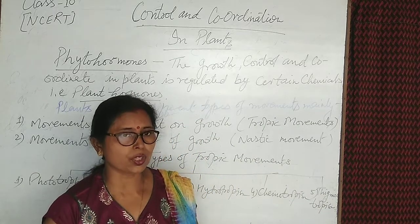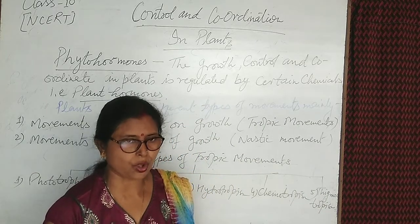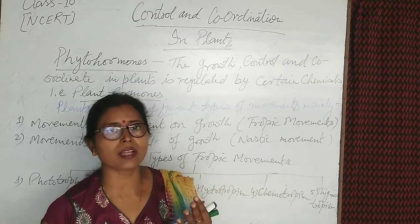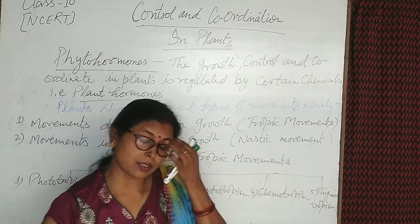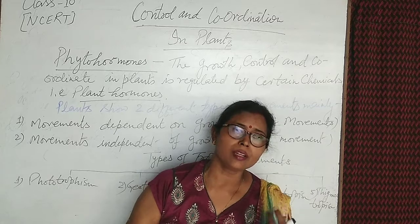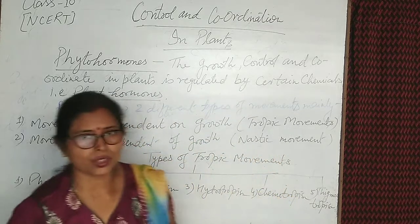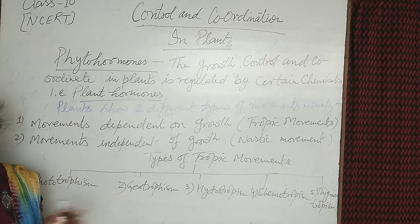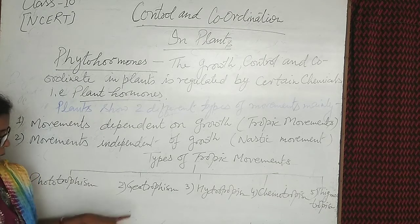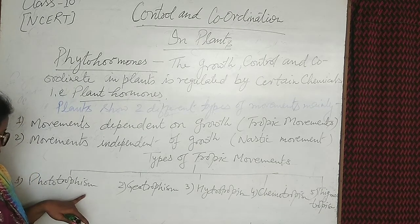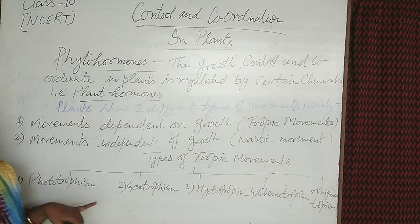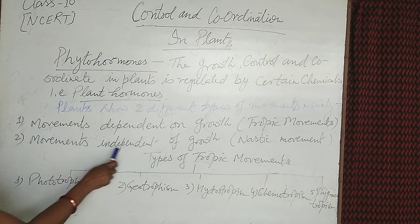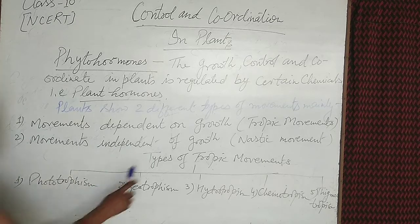In geotropism, the roots of a potted plant grow towards the lower part underground because gravitational force attracts them inward — this is positive geotropism. The shoot part of the plant grows towards the sun, showing negative geotropism. Phototropism is responsible only for response to sunlight.